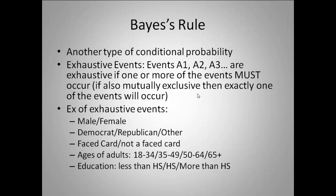Some examples of exhaustive events: male and female; Democrat, Republican, or other; a face card or not a face card; ages of adults — 18 to 34, and so on. The reason the ages example works is because it covers ages of adults, and in the United States you're not considered an adult until you're 18, so we don't have anything less than 18. For education, you could do less than high school, high school, or more than high school — those are just some general examples of exhaustive events.